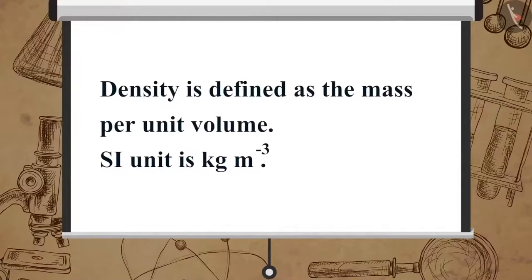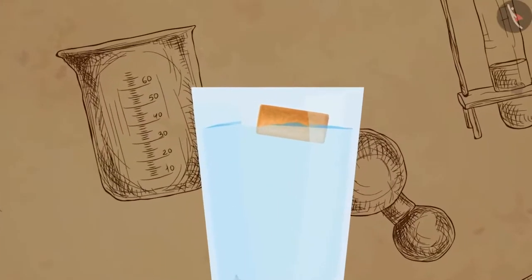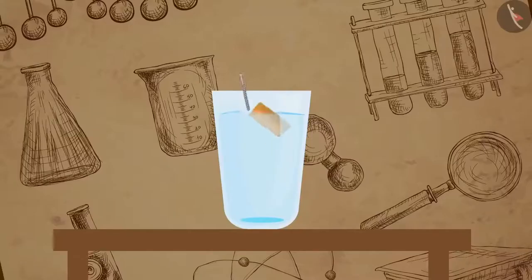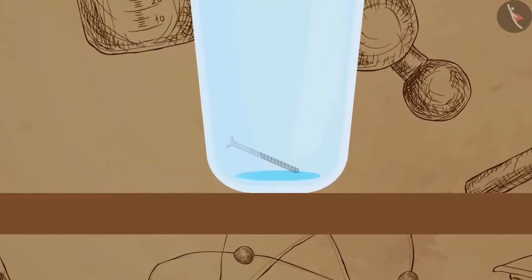Density is defined as mass per unit volume. Its unit is kilogram per meter cube (kg/m³). The cork floats because its density is less than that of water, meaning the upthrust on the cork is greater than its weight. The nail sinks because its density is more than that of water, meaning the upthrust on the nail is less than its weight.